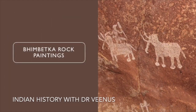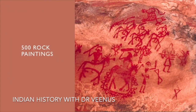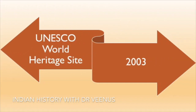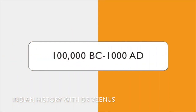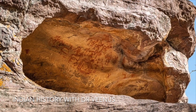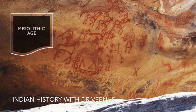Bhimbetka rock paintings are located south of Bhopal in the Vindhya ranges of Madhya Pradesh. The rock shelters have more than 500 rock paintings and were declared a UNESCO World Heritage Site in 2003. The oldest paintings are estimated to be 30,000 years old, surviving due to their location deep inside the caves. There is marked continuity in cave occupancy from 100,000 BC to 1000 AD, with many paintings superimposed on others. The paintings belong to Upper Paleolithic, Mesolithic, Chalcolithic, Early Historic and Medieval periods, though most belong to the Mesolithic age.